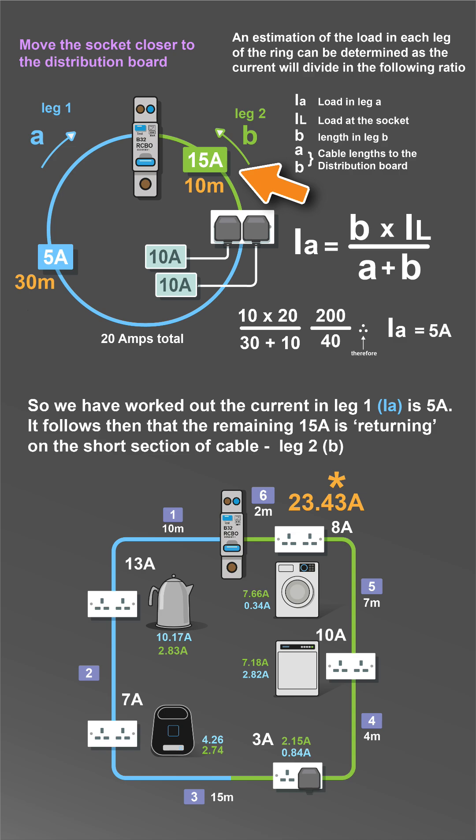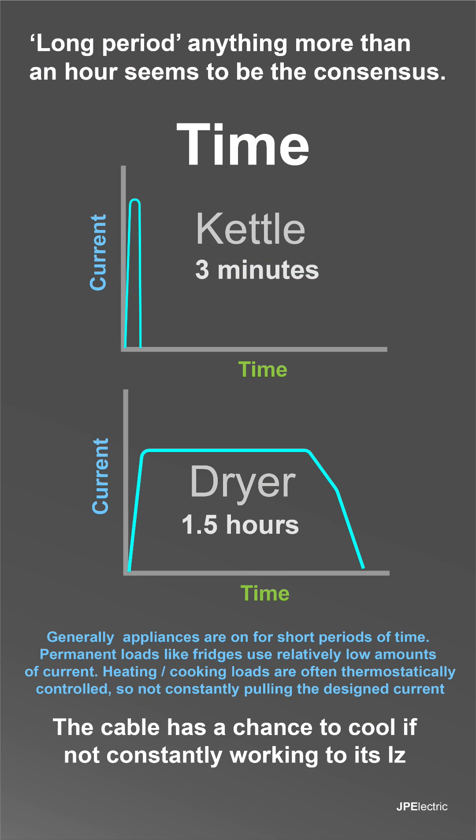We can't control what people plug in, but we can design it to limit high current loads at one end. And these currents add up, as you can see here. This final 2 meter section is overloaded, but we also need to consider time.